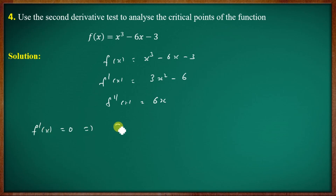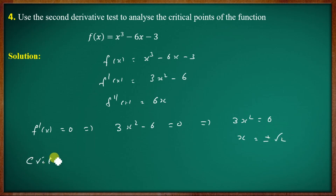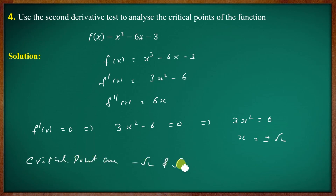Setting 3x square minus 6 equal to zero implies 3x square equal to 6, so x equal to plus or minus root 2. The critical points are minus root 2 and plus root 2.